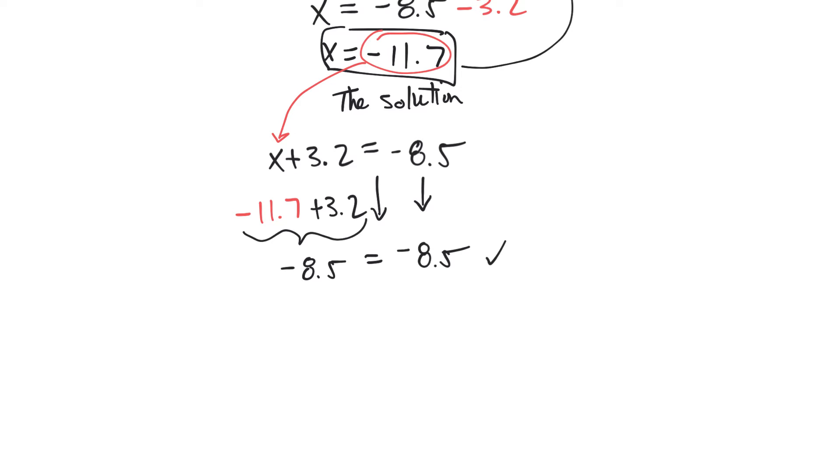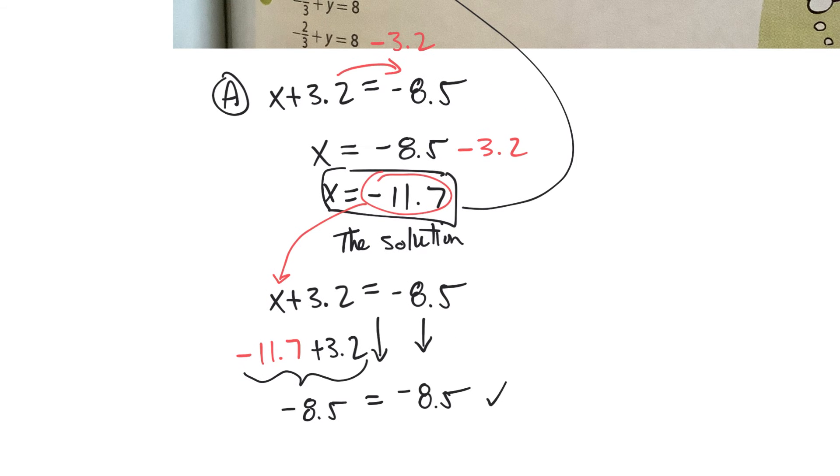It checks out. So what this means is I solve for x, and x is said to be negative 11.7. I plug it back into my original equation, and sure enough, it works. I hit my target of negative 8.5.